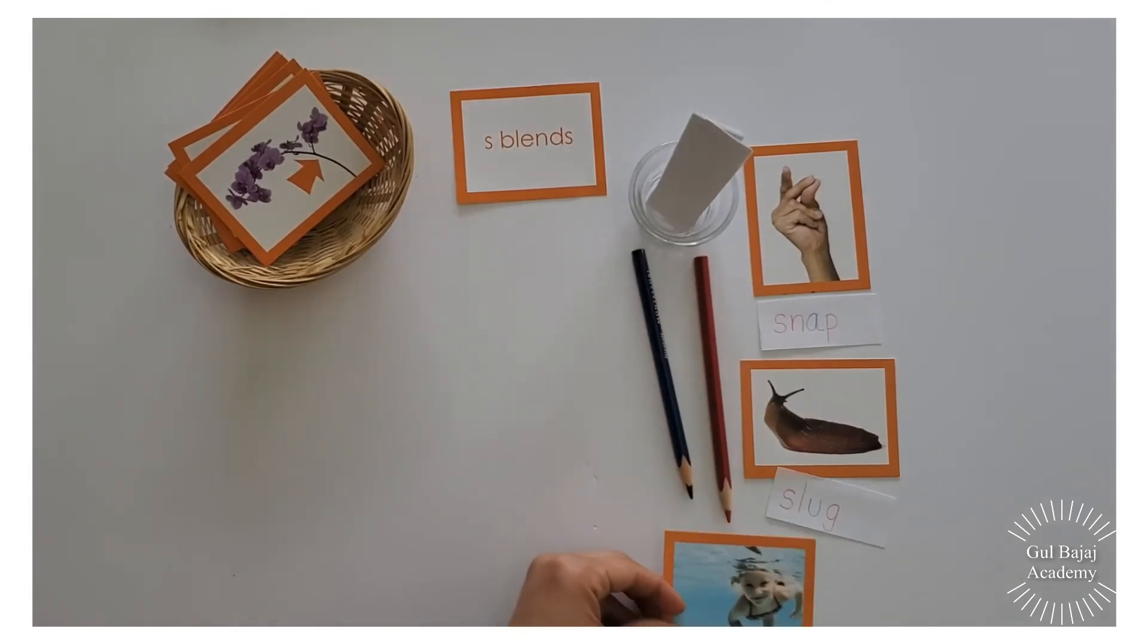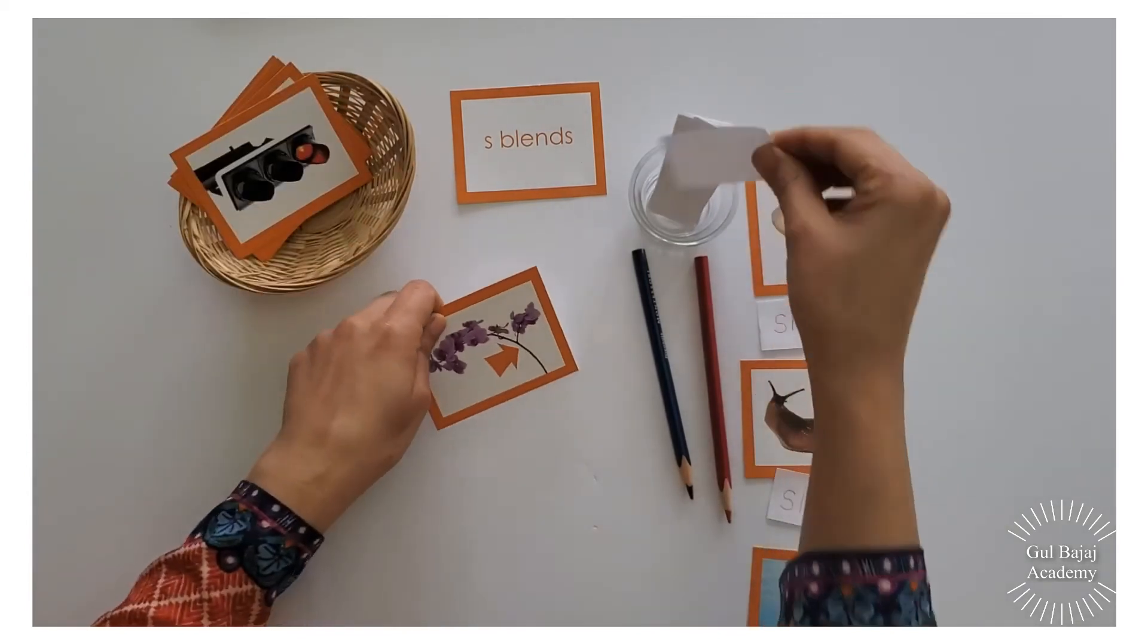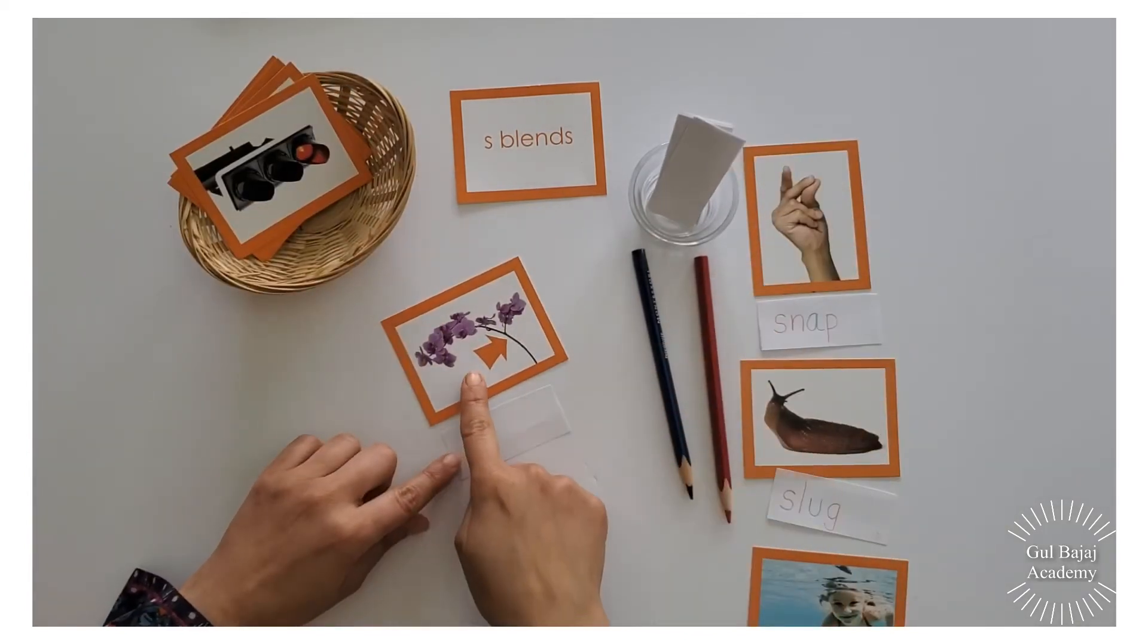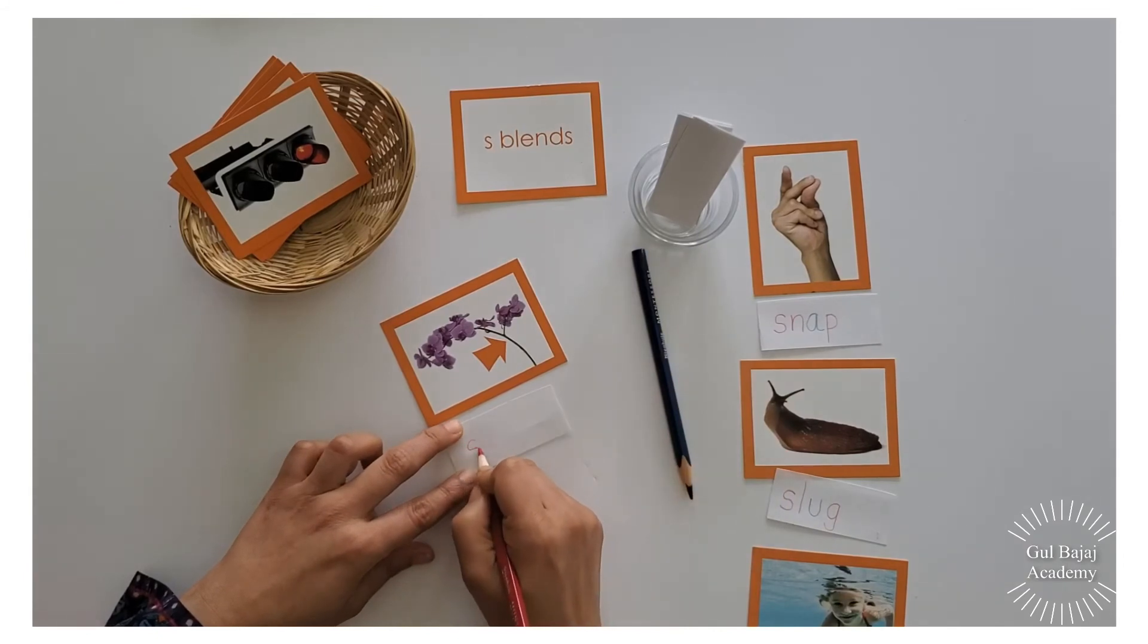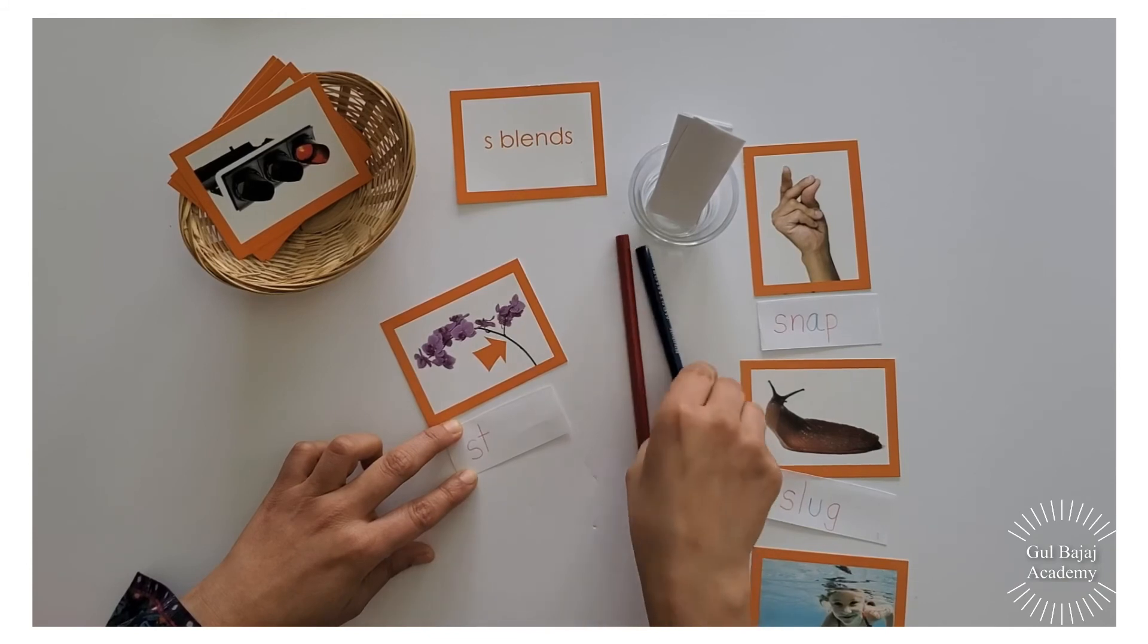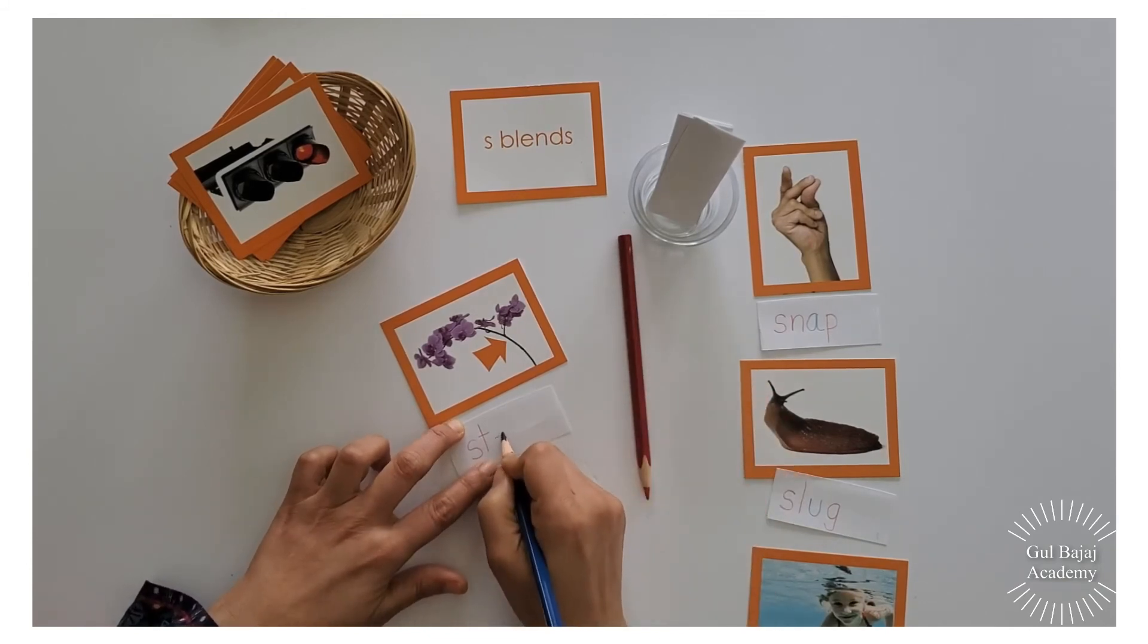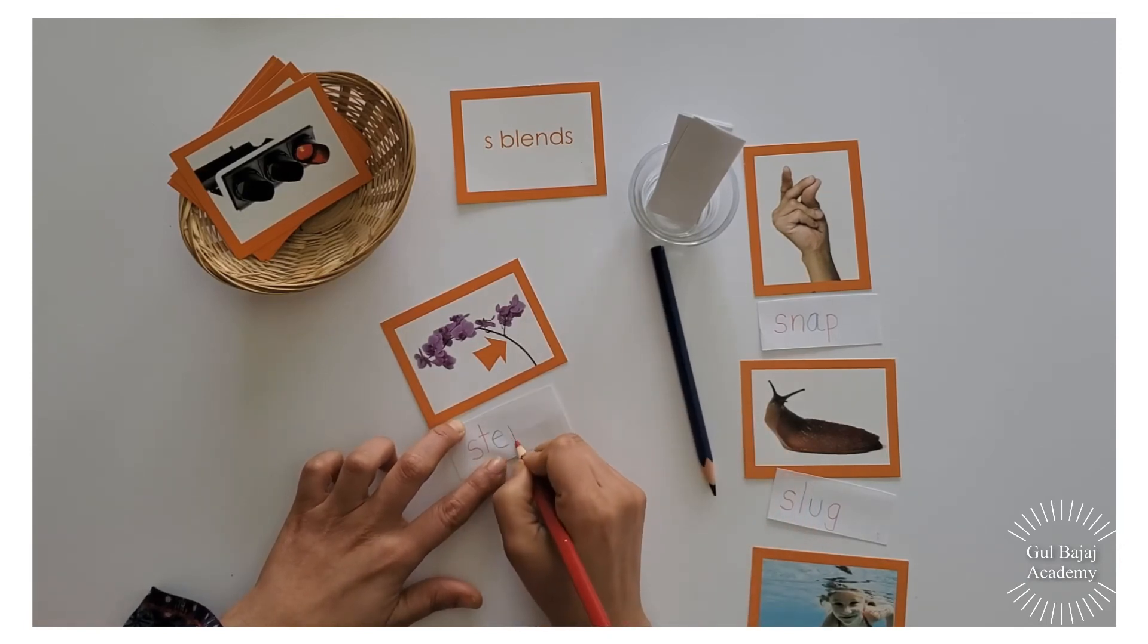So you'll keep doing that and let's do it. This one is a stem. Stem. That's my S blend. S, t, e, my vowel is e as in egg, and my ending sound is m. Stem.